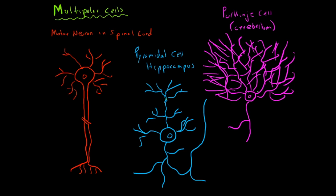So multipolar cells have a single axon with many dendrites. So once again, you have your single axon with many dendrites. And they are the most common type of neuron in the mammalian nervous system. So these three examples illustrate the large diversity of these cells. The spinal motor neurons innervate skeletal muscle fibers.